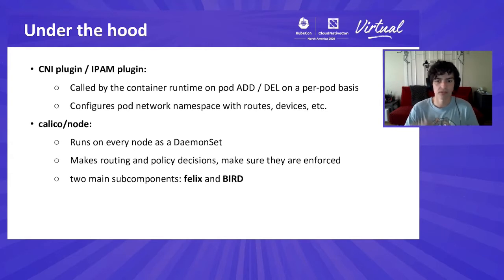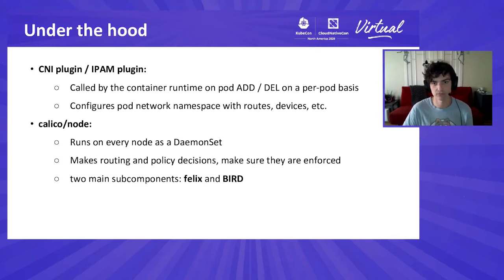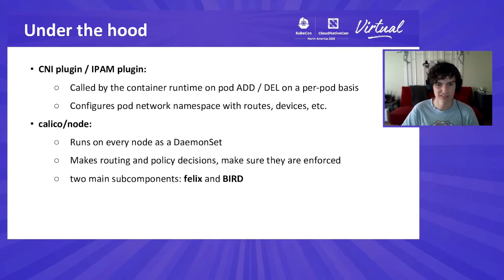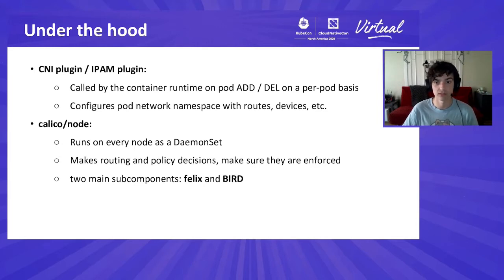Drilling down further, here's what's happening on each Calico node. There are really two main components. There's the CNI plugin, which is called by the container runtime as part of setting up and tearing down networking for each pod. This plugin gets called on pod add and pod delete, and it's responsible for setting up the network namespace, programming routes, virtual Ethernet devices — all the stuff that a pod needs in order to communicate with its local node.